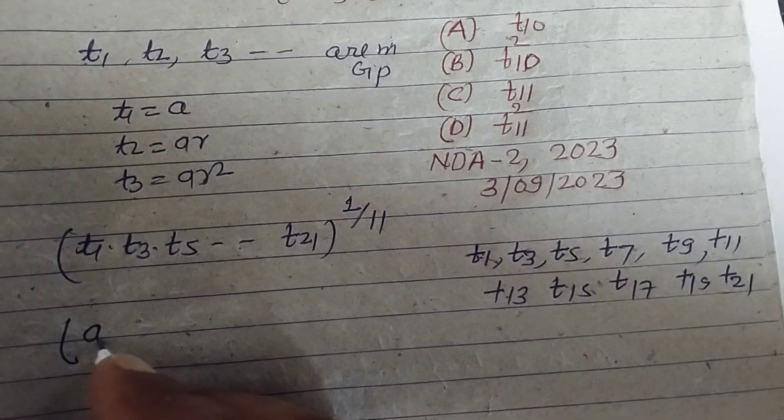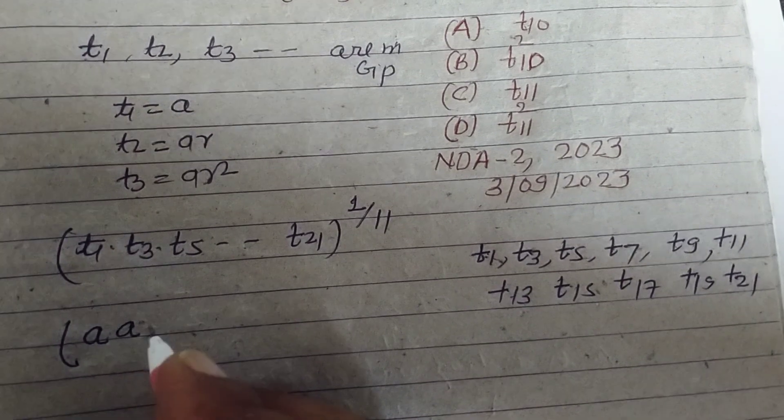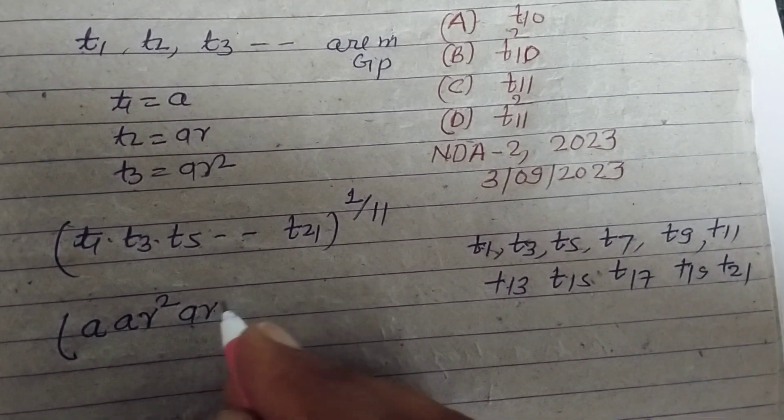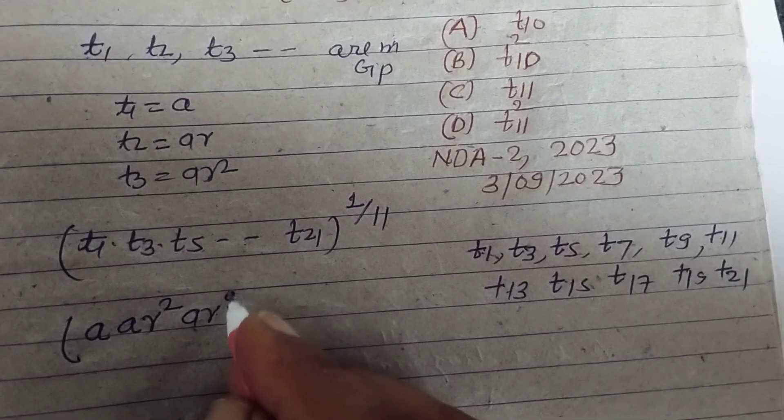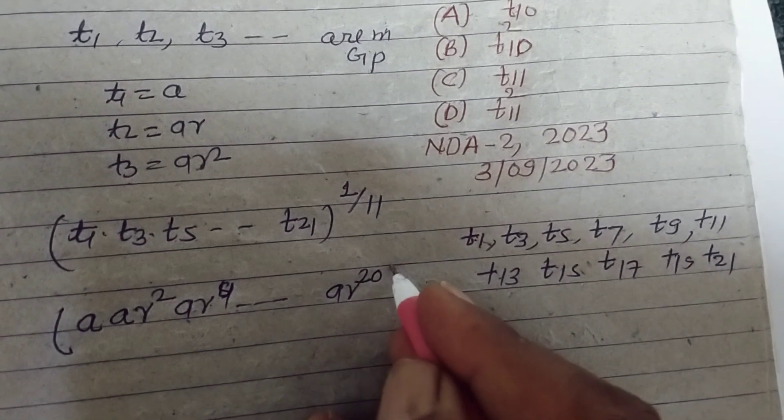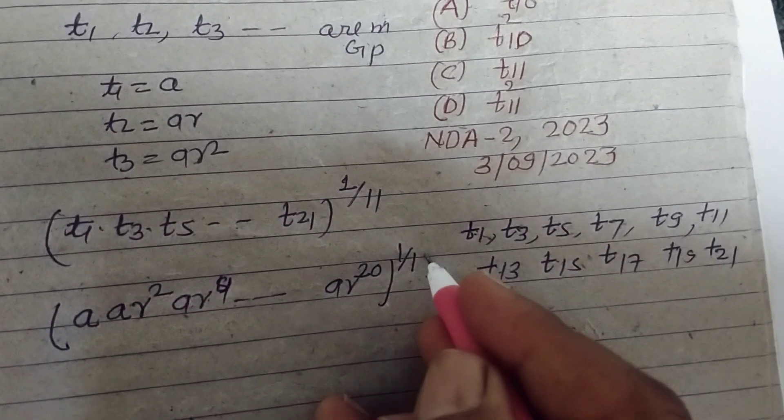We put the value: t1 is a, t3 is ar², t5 is ar⁴, and t21 is ar²⁰ to the power 1 by 11.